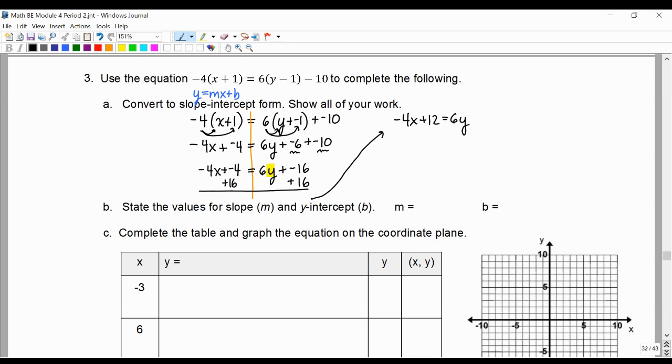The last step is all of the terms need to be divided by 6. We simplify negative 4/6 into negative 2/3 plus 2 equals y. And it is needed to rewrite this in the exact y equals mx plus b form.